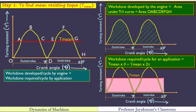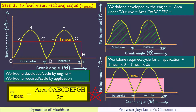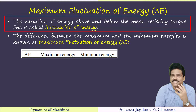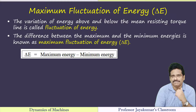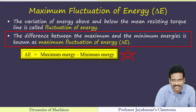By equating both, T_mean × θ equals the area under the curve (area O-A-B-C-D-E-F-G-H). From that, we can find T_mean. So T_mean equals the area under the curve divided by the crank angle for a cycle. By using the turning moment diagram, we can also determine maximum fluctuation of energy, delta E. The variation of energy above and below the T_mean line is known as fluctuation of energy. At one point, energy stored by the flywheel will be maximum, and at another point it will be minimum. The difference between maximum energy and minimum energy is maximum fluctuation of energy, delta E.